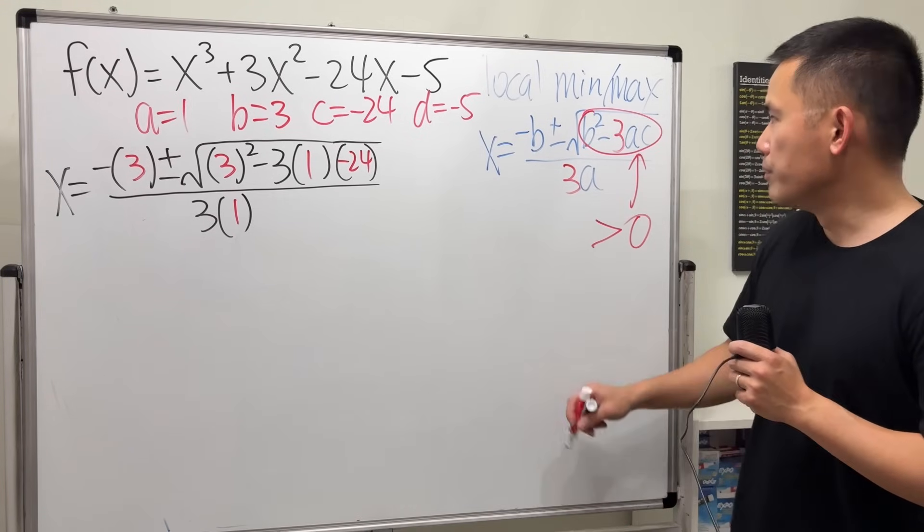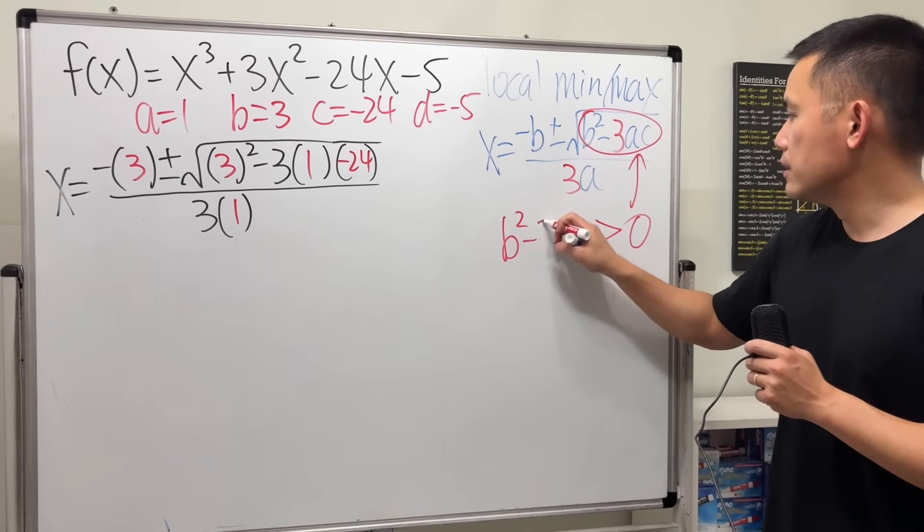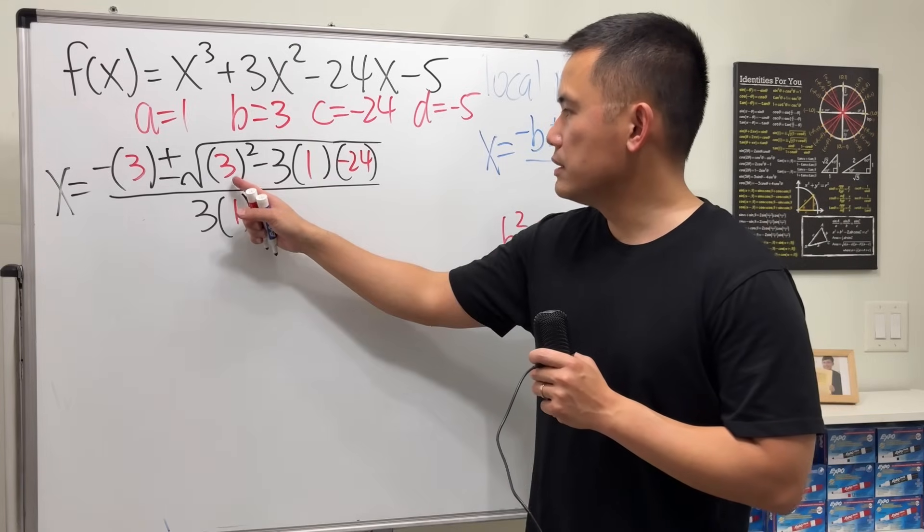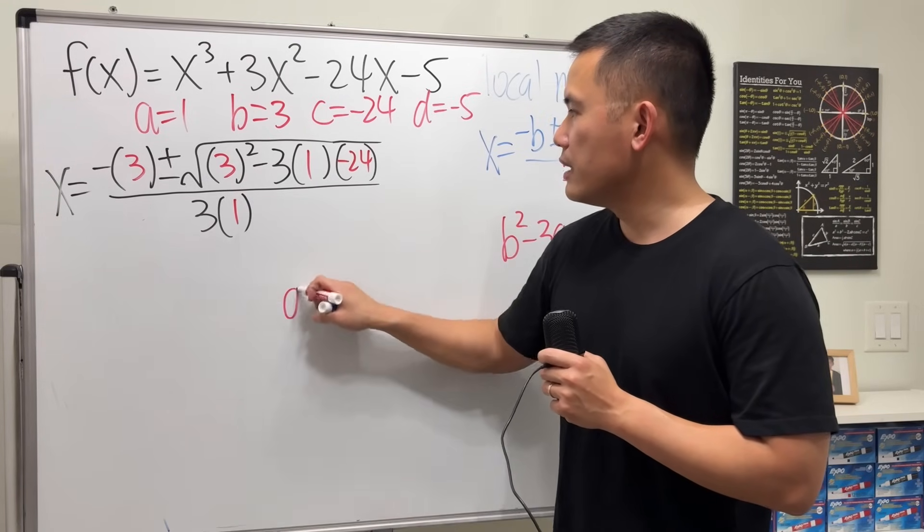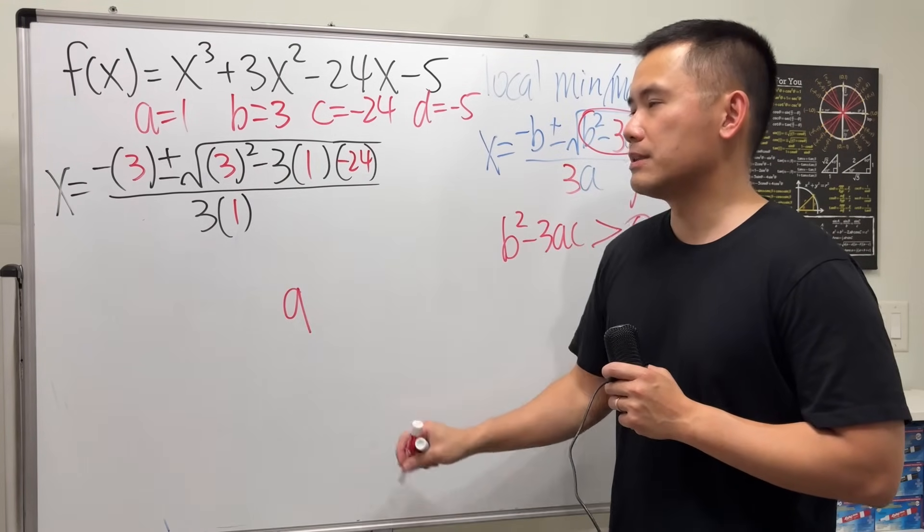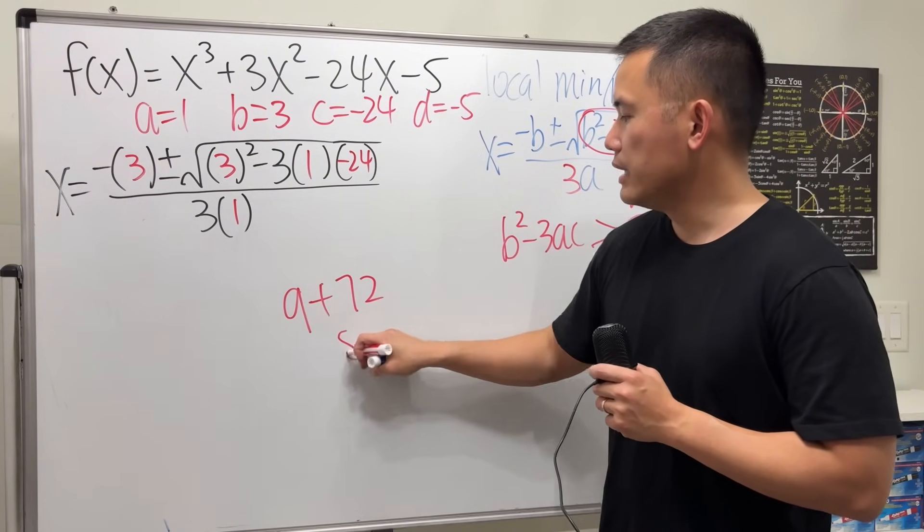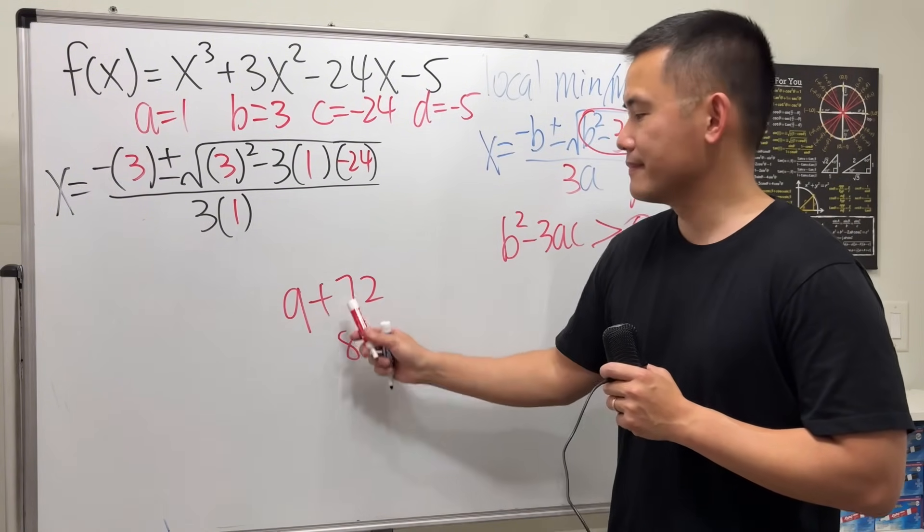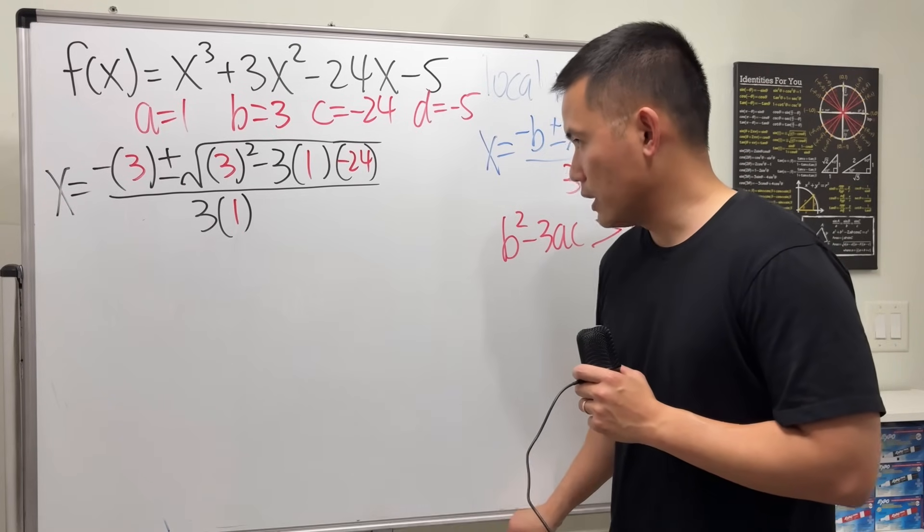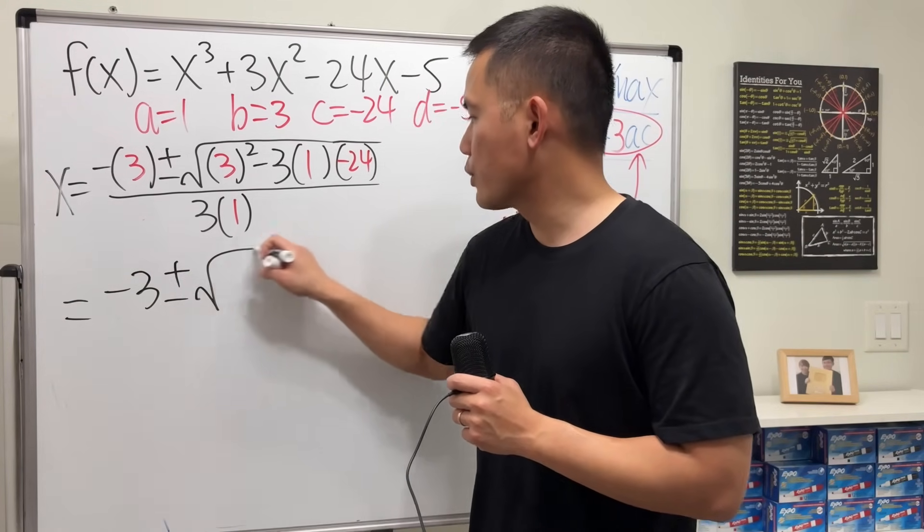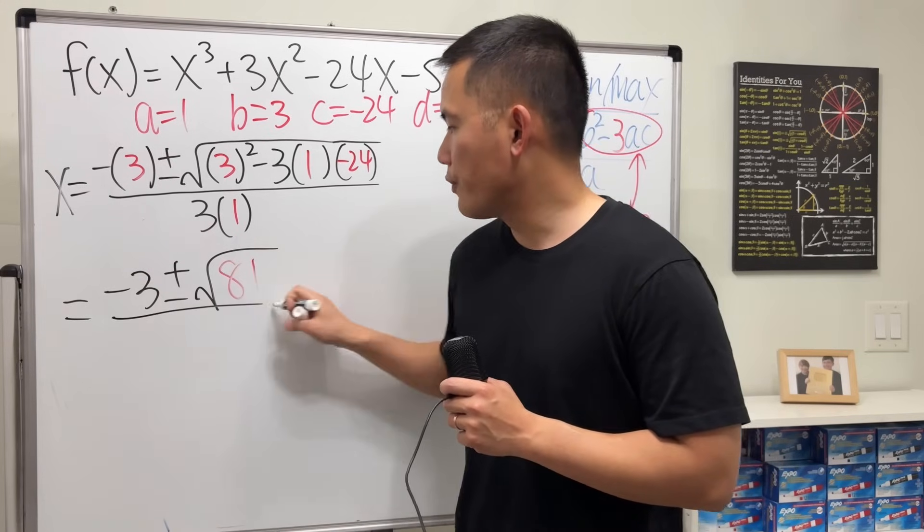But for this one it is. Have a look, this is going to be 9, and then that's 3 times that is plus 72, so it's 81 on the inside. So let's go ahead and write this down as negative 3 plus or minus square root of 81 over 3.